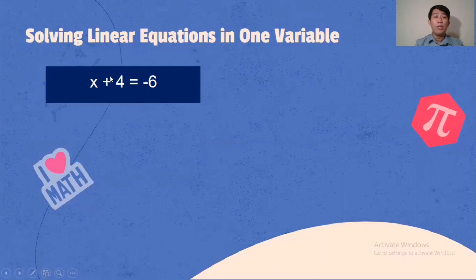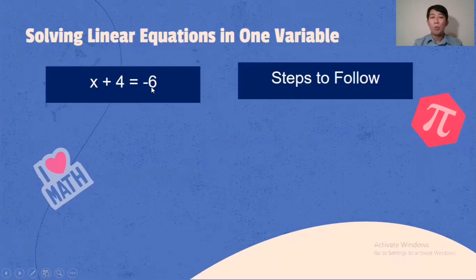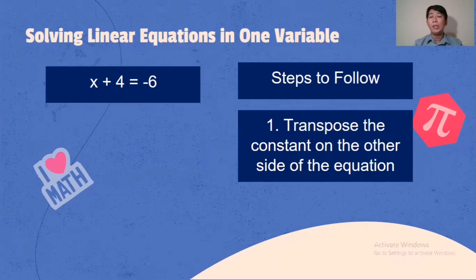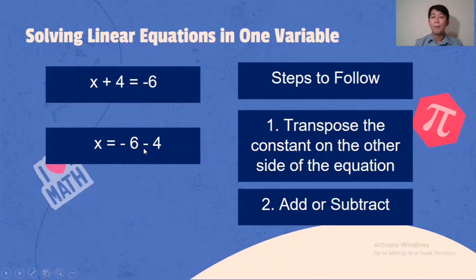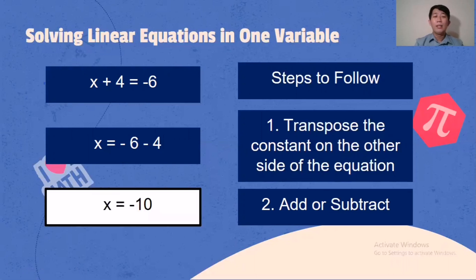Another example: x + 4 = -6. Transpose the constant on the other side. From positive 4, it becomes negative 4. So x = -6 - 4. Adding or subtracting: negative 6 minus 4 is negative 10. The final answer is x = -10. To check: negative 10 plus 4 equals negative 6. Correct.